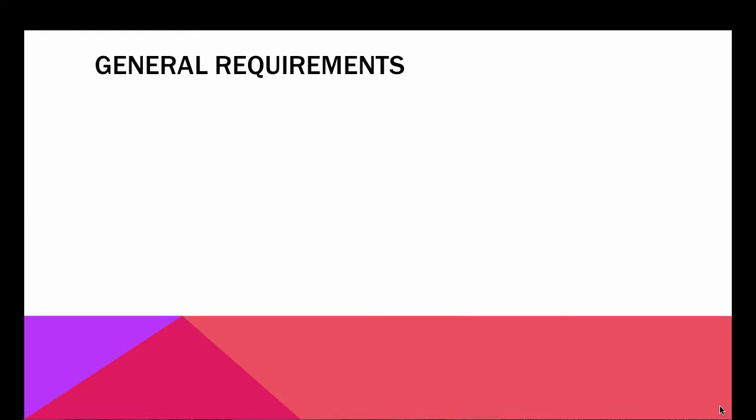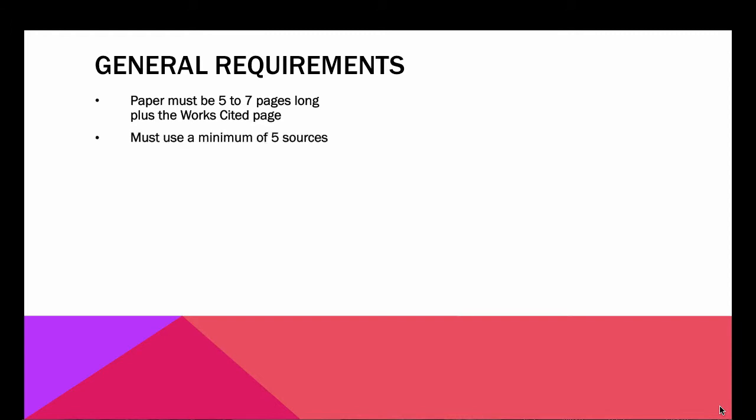Here are some of the general requirements for the paper. It has to be five to seven pages long, plus the works cited page, just like paper one was. You have to use a minimum of five sources, just as you did for paper one, and in a few minutes we're going to talk about what those sources have to be.